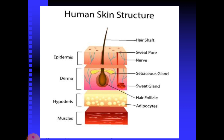The sebaceous glands are associated with hair follicles and produce an oily secretion called sebum. Sebum consists of lactic and fatty acids which maintain the pH of the skin between 3 to 5. This pH inhibits the growth of most microorganisms. A few bacteria that metabolize sebum live as commensals on the skin and sometimes cause a severe form of acne.